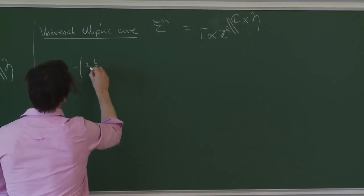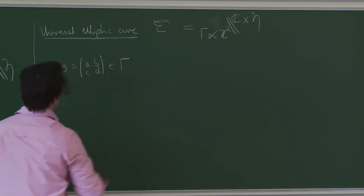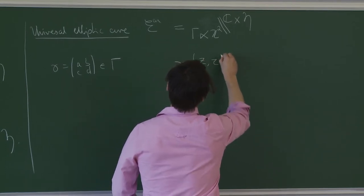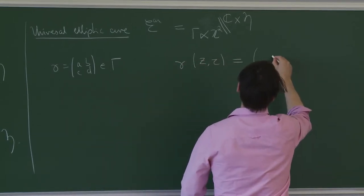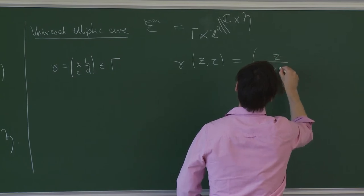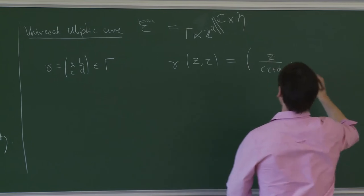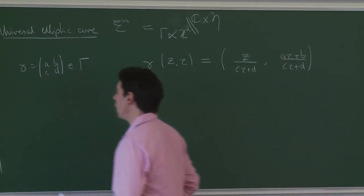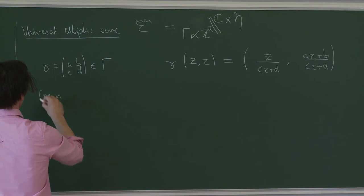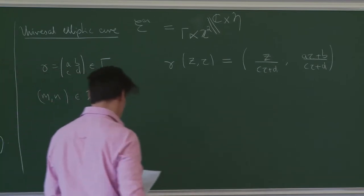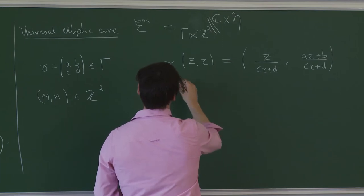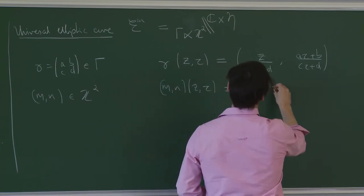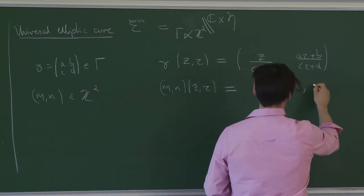If gamma is A, B, C, D, a matrix in SL2Z, then gamma of Z tau is Z over C tau plus D, and then gamma acts on tau in the usual way: A tau plus B over C tau plus D. And for MN in Z squared, we have MN acting on Z tau equals Z plus M tau plus N, and tau stays put.